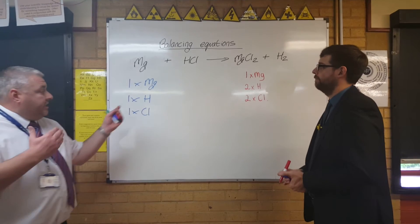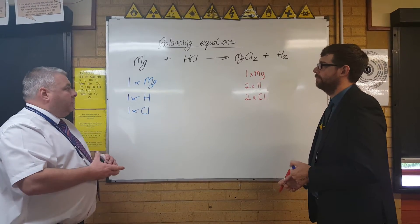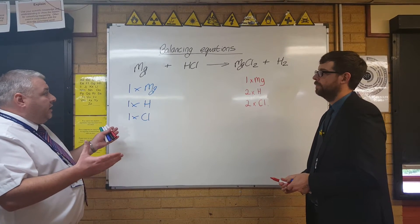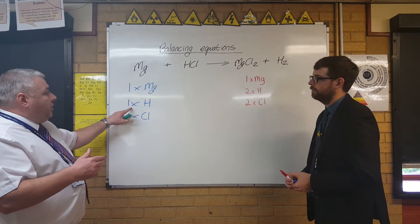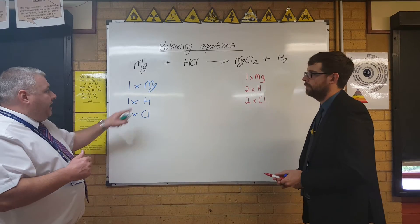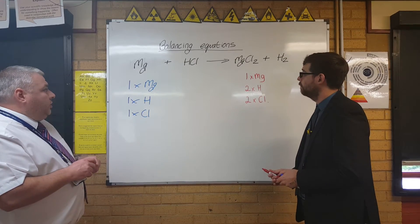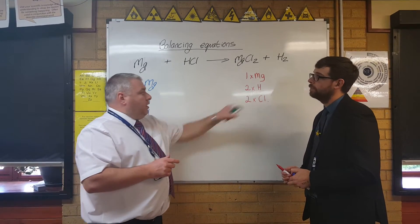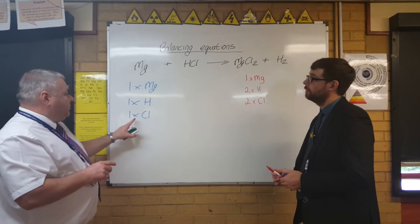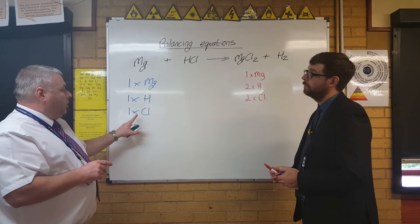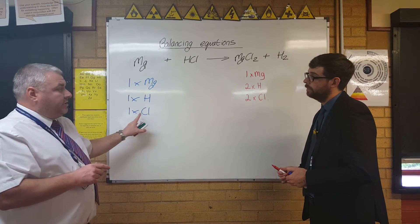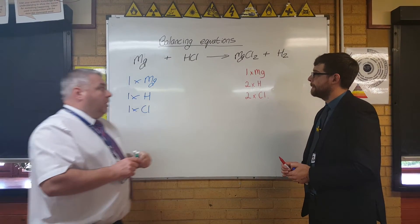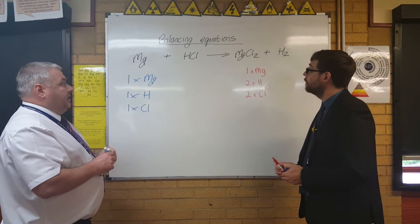So if we're looking at each side now — easy one to see — we've only got one hydrogen atom on the left where we've got two on the right-hand side. And we've also only got one chloride atom where we have two on the right-hand side.